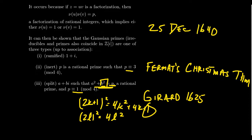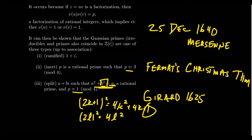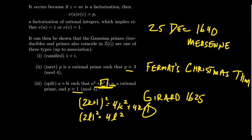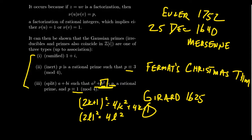The necessity — that if p ≡ 1 mod 4 then p is a sum of two squares — is where Fermat comes in. Fermat wrote a letter to Mersenne on Christmas Day, 1640, claiming this statement was true without proof. The first known proof of the full theorem, both necessity and sufficiency, was due to Euler in 1752. Fermat has a bad habit of claiming results without proof, so it's very unlikely he had a legitimate proof of this.